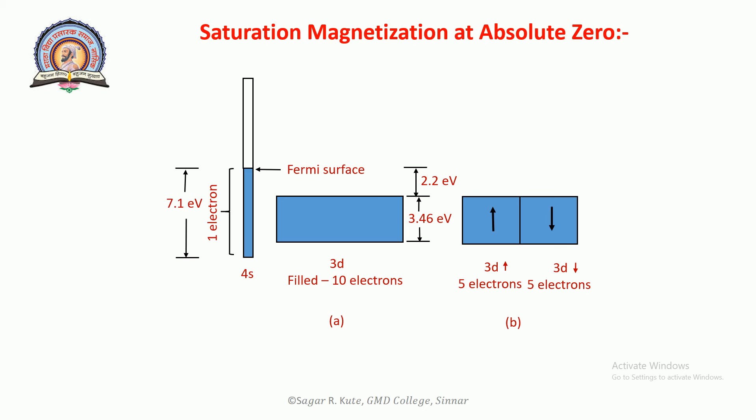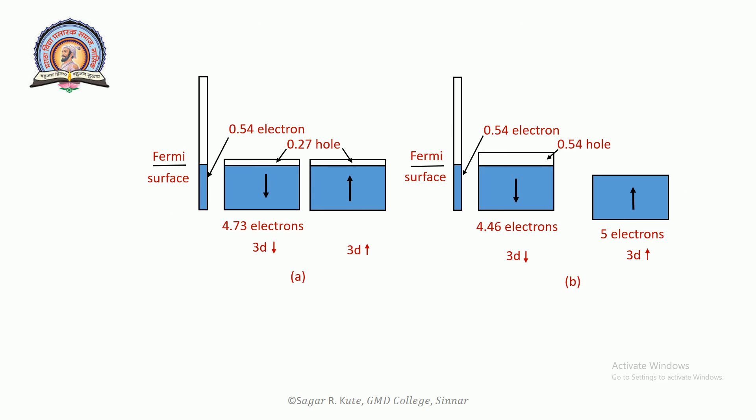This diagram indicates the band relation of nickel above the Curie temperature. The net magnetic moment is zero as there is an equal number of holes in the 3d spin-up and 3d spin-down bands.